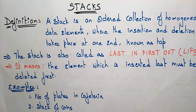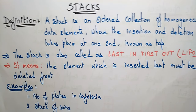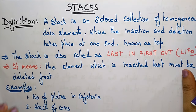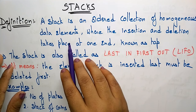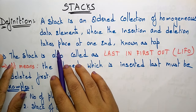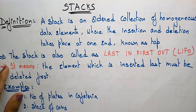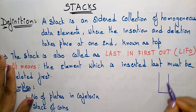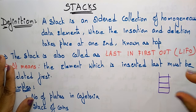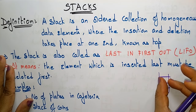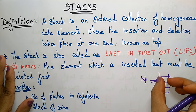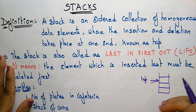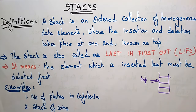Welcome back to the next topic in data structures: stacks. A stack is one of the important topics for storing data in memory. A stack is an ordered collection of homogeneous data elements where the insertion and deletion takes place at one end — that is, at the top. So we arrange the elements in a stack such that insertion and deletion takes place only at the top end.